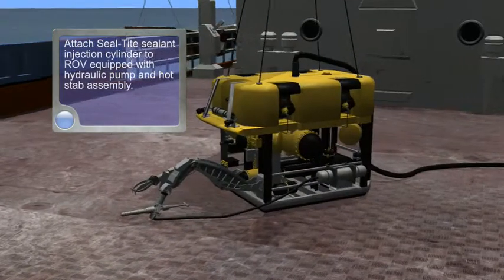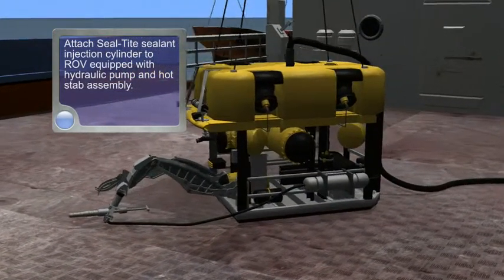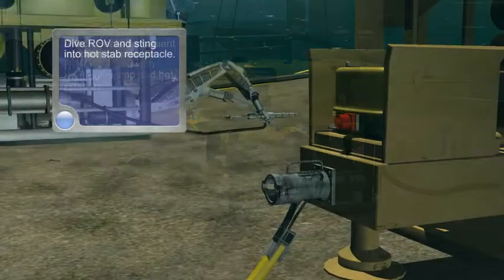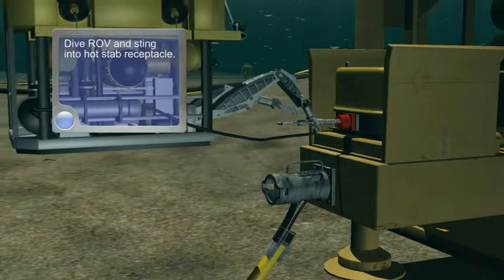Attach Seal-Tite Sealant Injection Cylinder to ROV equipped with Hydraulic Pump and Hot Stab Assembly. Dive ROV and Sting into Hot Stab Receptacle.